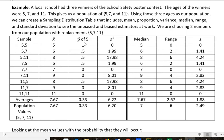What if I wanted to know the proportion of fives in the population? With three values, my proportion of fives is one-third, or 0.33. When I look at my samples: 5 and 5 gave 100% fives, 5 and 7 gave half, 5 and 11 gave half, 7 and 5 gave half, 7 and 7 had no fives, 7 and 11 had no fives, 11 and 5 gave half, and so forth. The average of all my sample proportions is 0.33, which exactly matches the population value of 0.33.